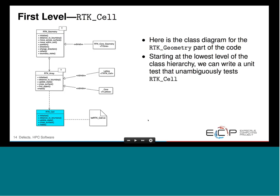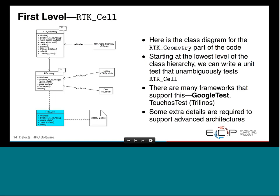Starting at the lowest level of this class hierarchy, I can write a test that unambiguously tests all the functionality of a particular class. The class is named RTK — Reactor Toolkit. I can make an actual test in a test directory right next to the source file called testrtkcell.